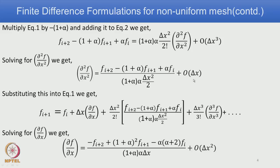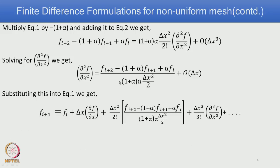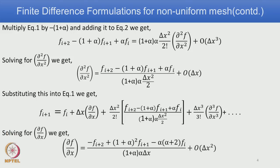Now, substituting this expression back into equation 1, which is the forward difference equation, and after simplification, we get the first derivative forward difference formula with non-uniform spacing. Alpha appears in this expression, and this formula is of order delta x squared.